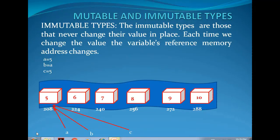In an immutable type of data, each time we change the value, the variable's address will change. Here we are storing a = 5, b = a (so b is also equal to 5), and c = 5. All three reside in memory location 208 — a, b, and c are all storing the value 5.